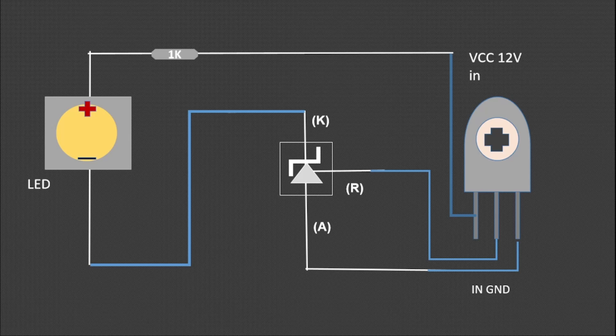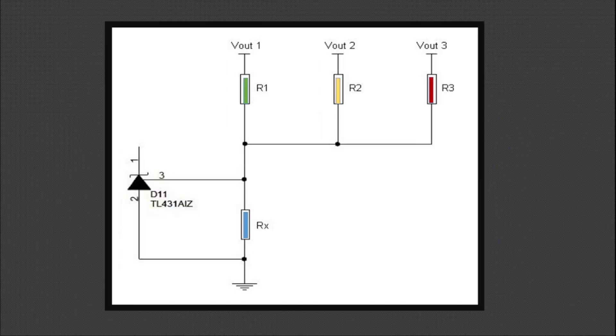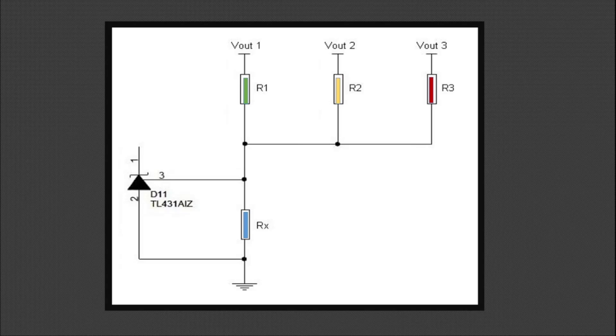One thing to remember here is that Zener diode works in reverse bias and diode works in forward bias. And from this diagram, you can control it with different voltages by adding different resistances as you need.